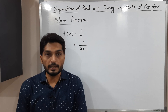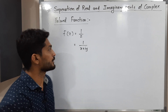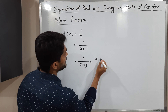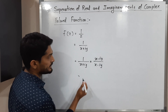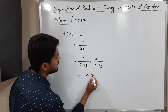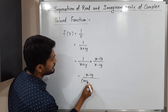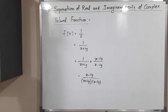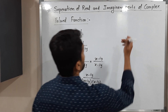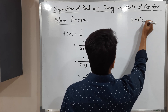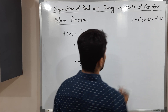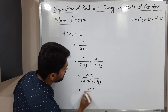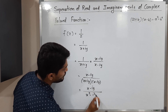To separate the real and imaginary parts, we multiply numerator and denominator by the complex conjugate: 1 over (x plus iy) times (x minus iy) over (x minus iy). The numerator becomes x minus iy. For the denominator, we use the identity (a plus b)(a minus b) equals a squared minus b squared, giving x squared minus i squared y squared, which equals x squared plus y squared since i squared equals minus 1.